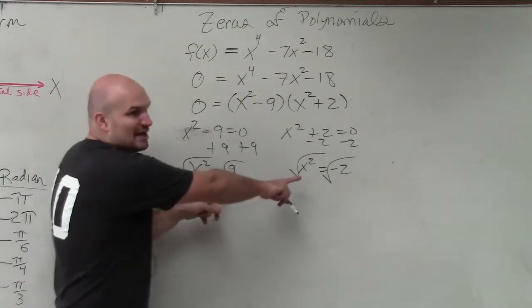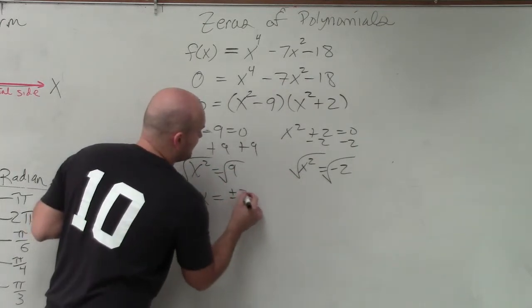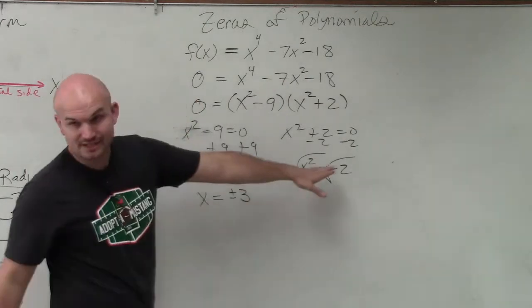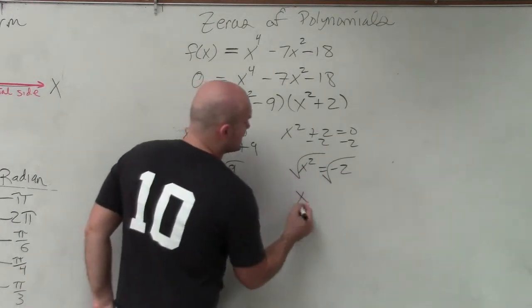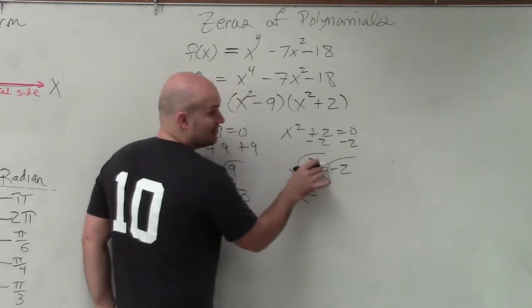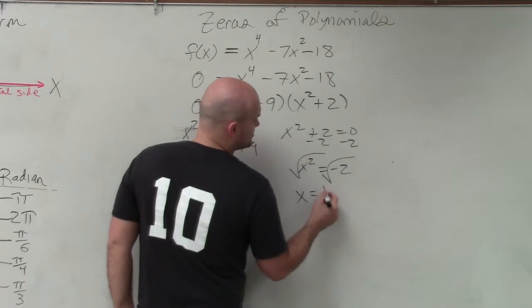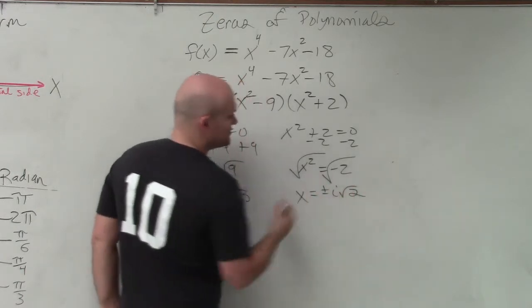So right now I only have two. But when I include the plus or minus, I have plus or minus 3. I can't take the square root of 2, but we do understand that that's going to be a complex root. So that's going to be plus or minus i square root of 2.